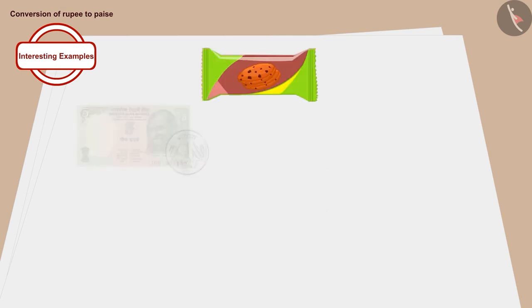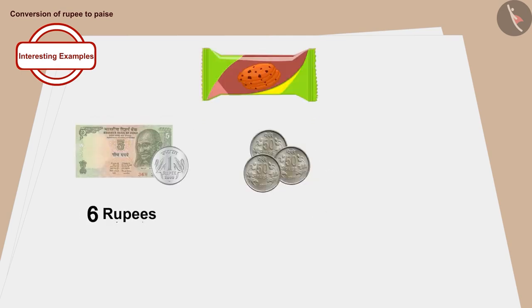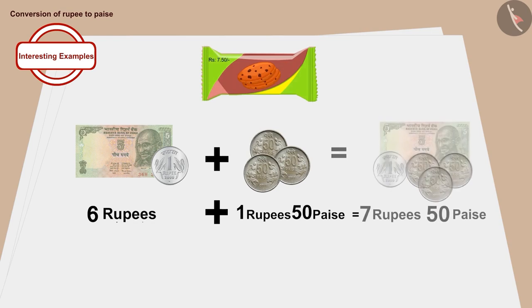Now, if we add it to the 6 rupees, the price of a packet of biscuits is 7 rupees and 50 paise.